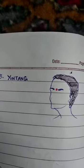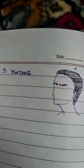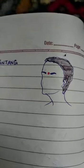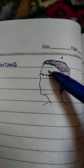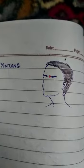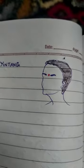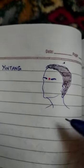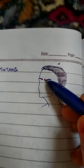The third one is Yin Tang, or GV 24.5, often called the third eye point because it's located between the brows. This single acupressure point helps to relieve a stuffy or runny nose and sinus headache pain. To find it, place one or two fingers between your eyebrows, finding the area just above the bridge of your nose where your forehead connects to the nose. Apply pressure or rub the area for a few minutes.